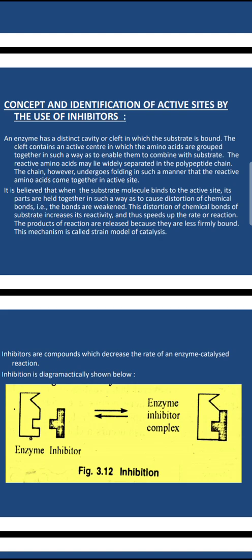It is believed that when the substrate molecule binds to the active site, its parts are held in such a way as to cause distortion of chemical bonds — i.e., the bonds are weakened. The distortion of chemical bonds of the substrate increases the reactivity and thus the rate of reaction. The products of reaction are released because they form less favorable bonds. This mechanism is called the strain model of catalysis.